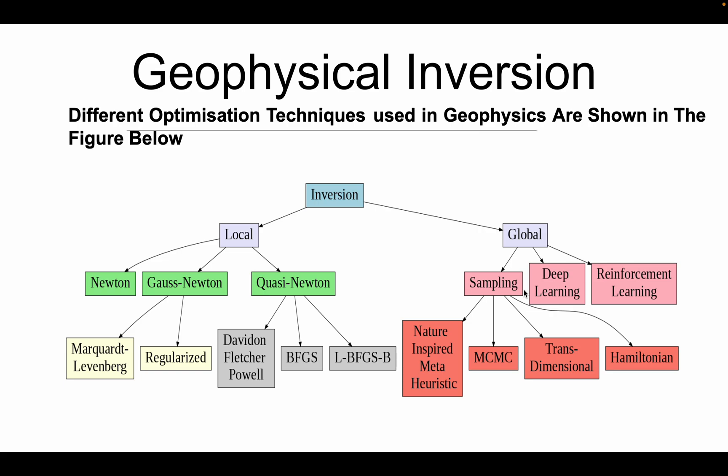When we come to sampling methods, the most favorite for geophysicists is MCMC — Markov Chain Monte Carlo. The concept is that every sample which I pick in my parameter space, the next sample I'm going to pick is going to depend upon the previous sample which I have picked. In the MCMC algorithm, the next parameter we are going to pick is just dependent on the previous element which we have picked.